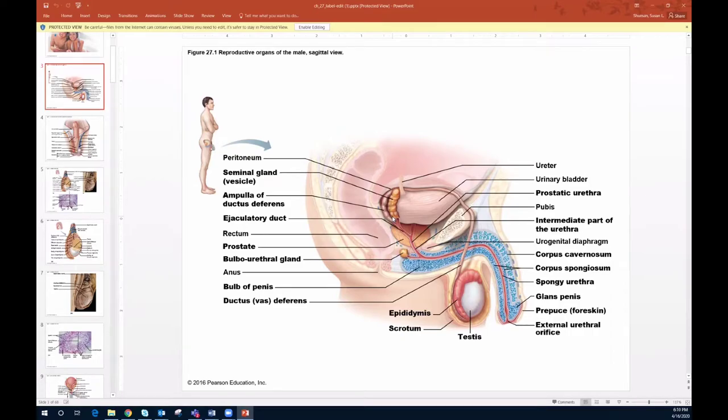So prostaglandins, in this case, their job is to help thin the cervical mucus. When you thin the cervical mucus, that's a smart thing because that's another barrier the sperm are going to have to try and get through.